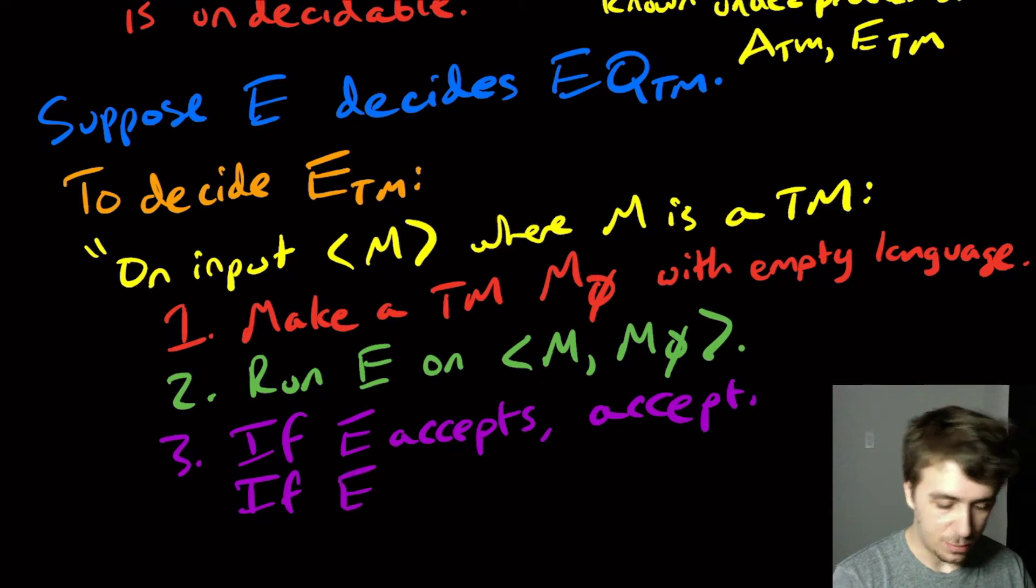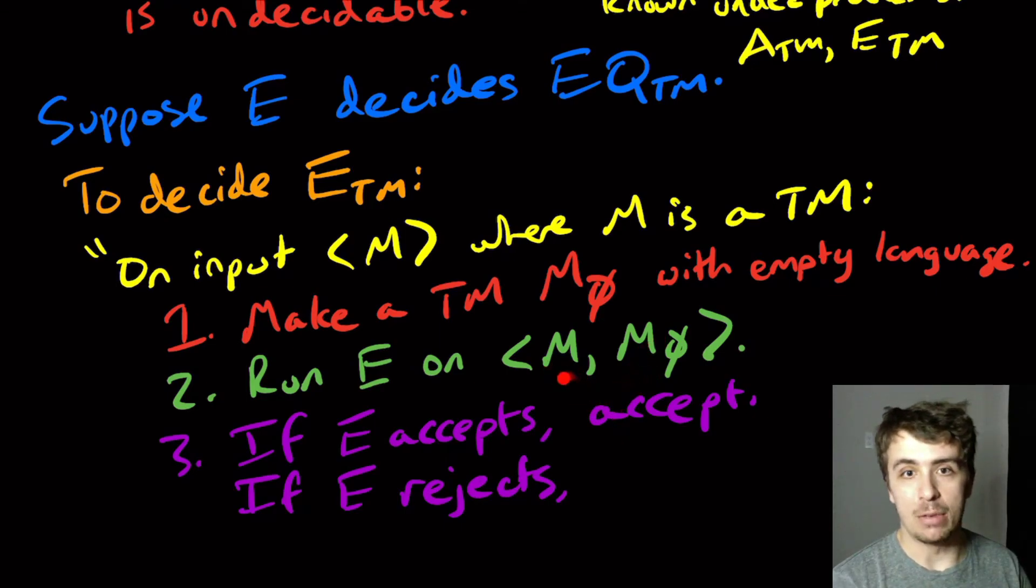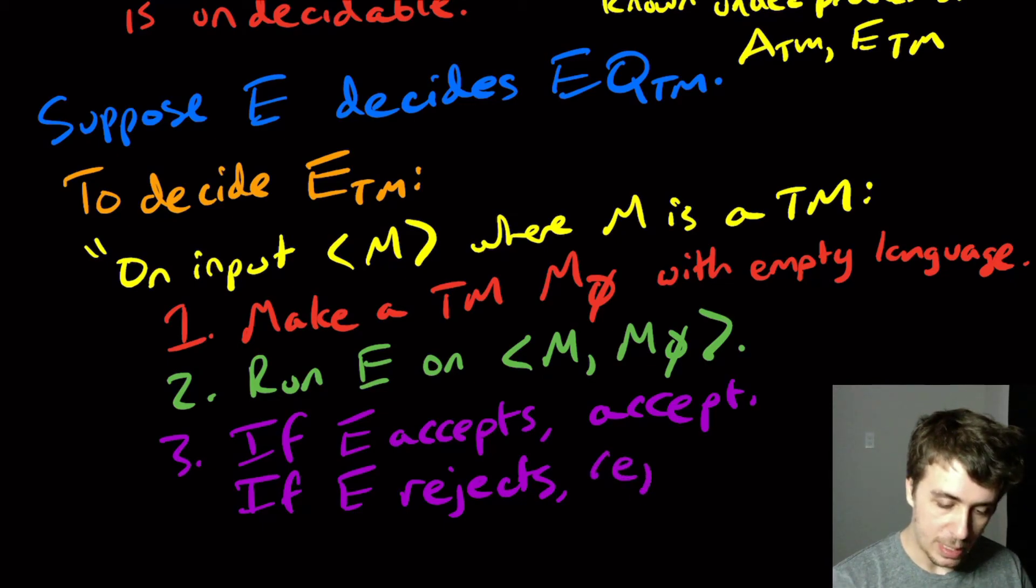And for similar reason, if E rejects, then that means that these two have different languages, which means that M must not have empty language, which for our purposes, we need to say reject here, because we're trying to decide the emptiness problem.